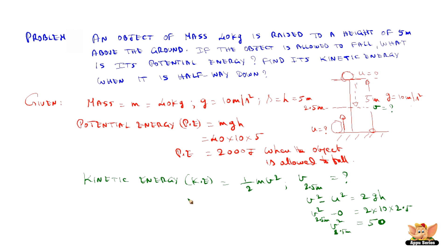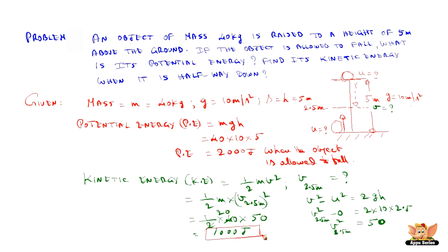So the kinetic energy is half m v squared. We need half m into v squared at 2.5 meters, which is half into 40 into 50. This gives 1000 joules. So the kinetic energy when the object is halfway down, at the 2.5 meter point, is 1000 joules.